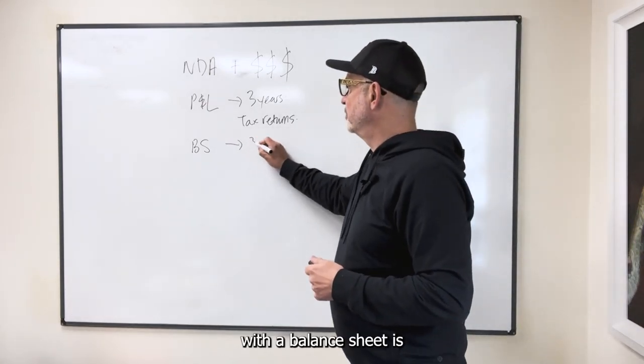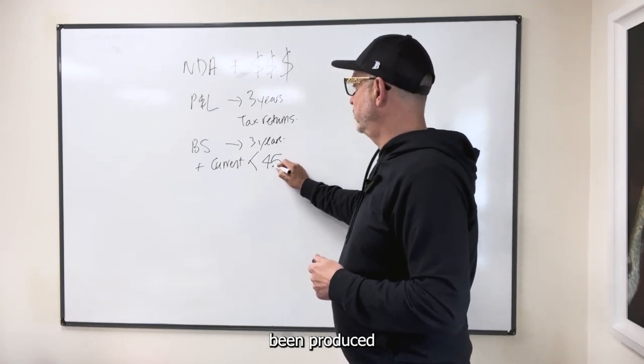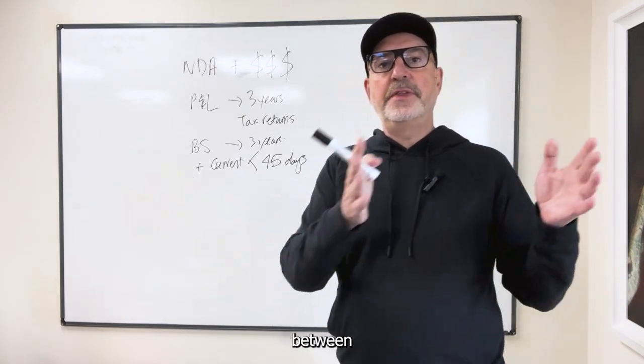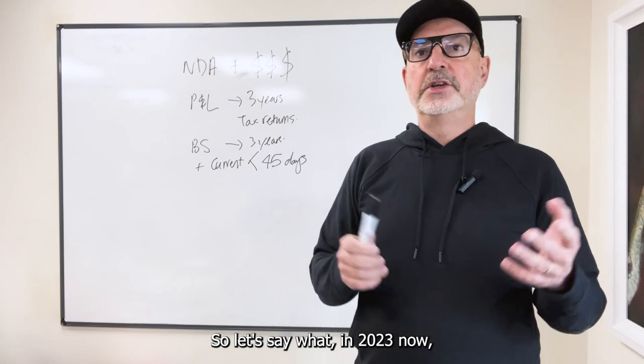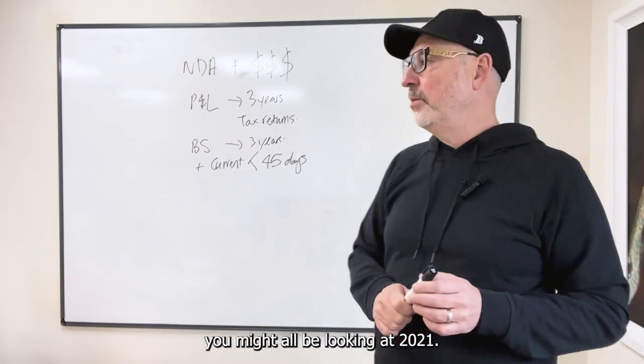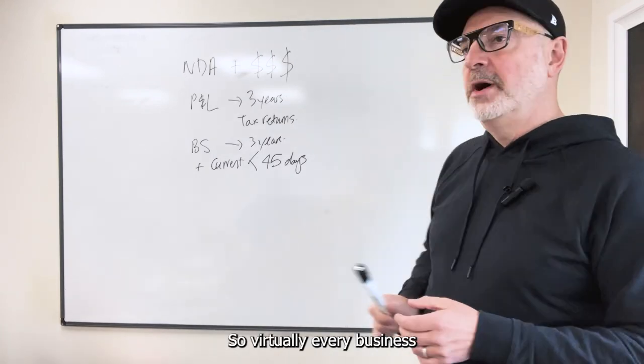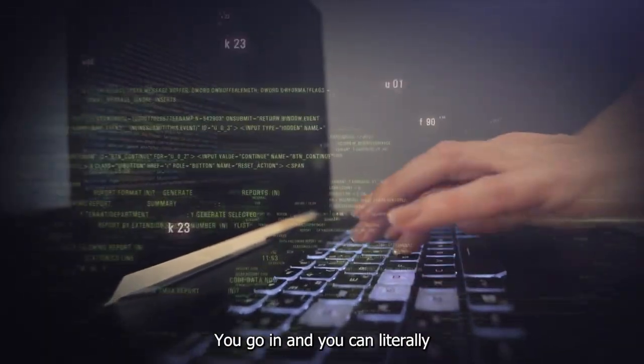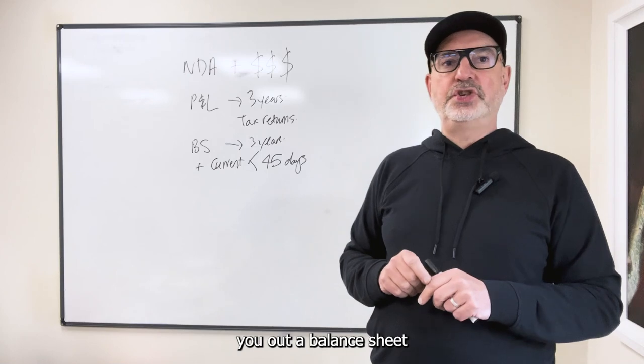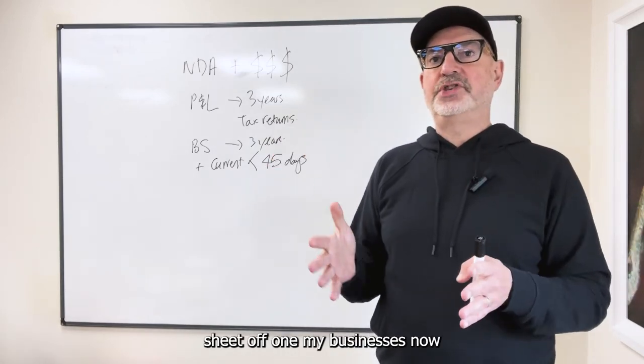So we definitely want the balance sheets for the last three years. And what you also want with a balance sheet is you want a balance sheet that's current. And what I mean by that is it's a balance sheet that's been produced within the last 45 days. So why is that really important? Well, because sometimes there's a delay between the end of a financial year. So let's say we're in 2023 now, and you're looking at a business, you might not have got the 2022 accounts yet. You might only be looking at 2021. So if you've got a balance sheet from 2021, which is like 18 months ago, you can't really understand financially what's going on in the business. So virtually every business that's worth buying will have internal accounting software. You can literally log in to the accounting platforms of any of my 27 businesses right now, and I could print you out a balance sheet as of today, not yesterday, not last week, today.